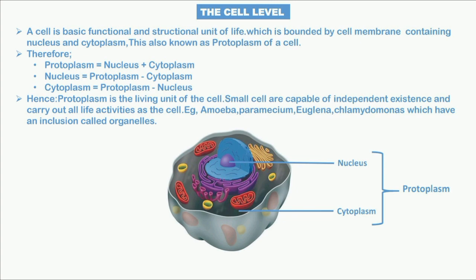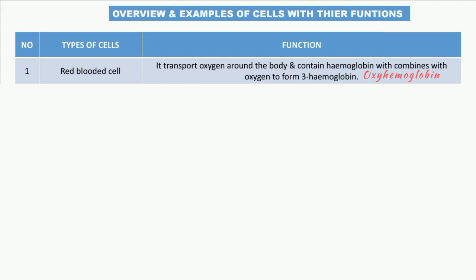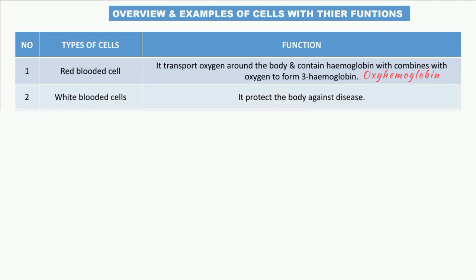Looking at examples of cells and their functions: red blood cells transfer oxygen around the body and contain hemoglobin, which combines with oxygen to form oxyhemoglobin. White blood cells protect the body against diseases and infections.